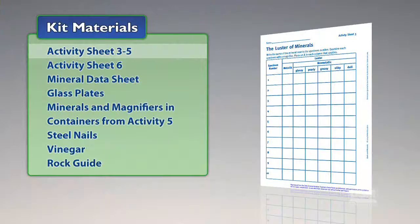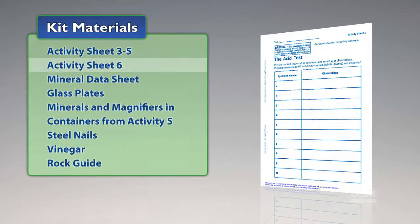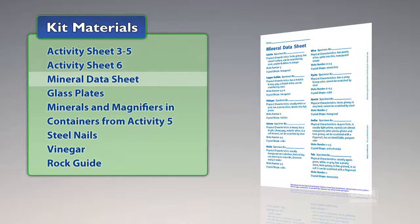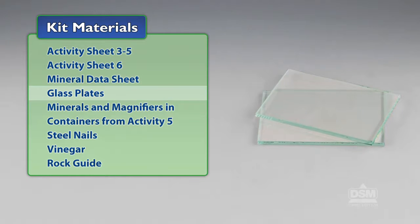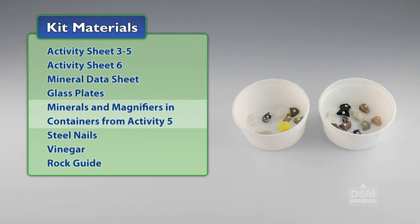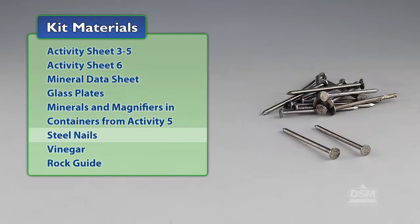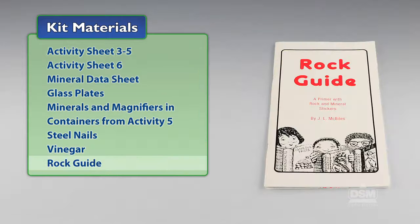You will need the following materials from the kit: activity sheets three through five, activity sheet six mineral data sheet, glass plates, mineral specimens one through ten, magnifiers in storage containers from activity five, steel nails, vinegar, and the rock guide.